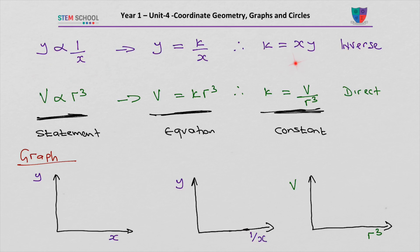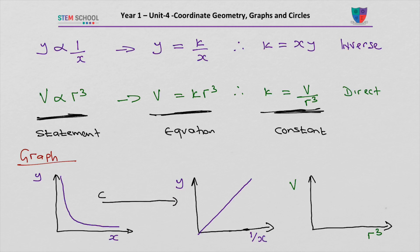Now let's look at the graphs. If we plot y against x, we get a curve. But if we plot y against 1/x — meaning y is directly proportional to 1/x — we get a straight line through the origin. What we've done is converted the curve to a straight line by plotting 1/x instead of x.